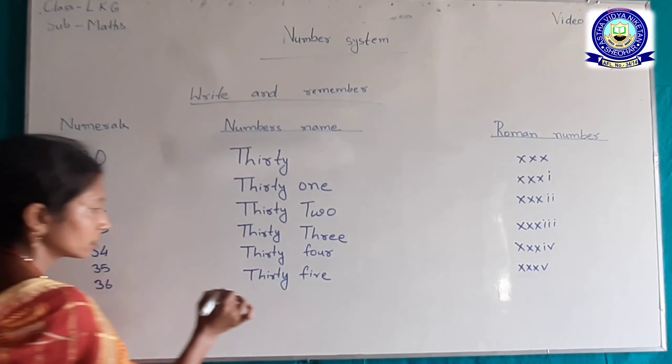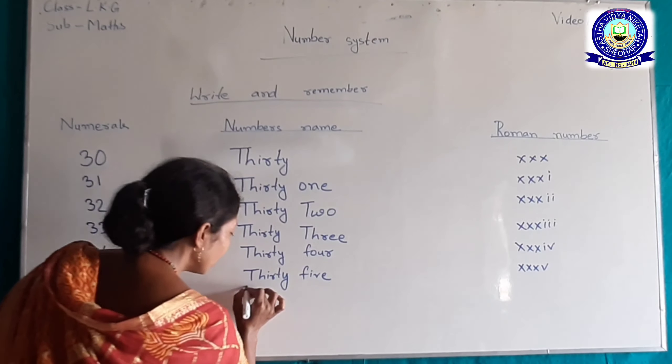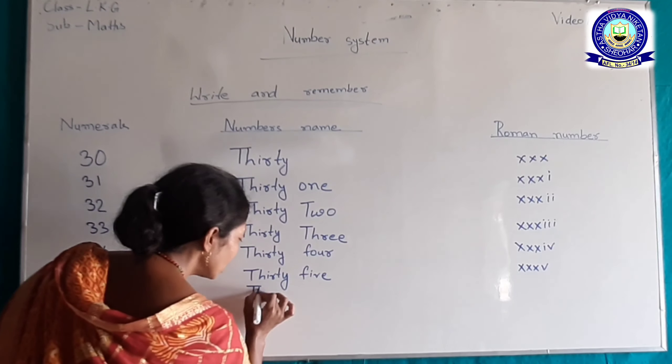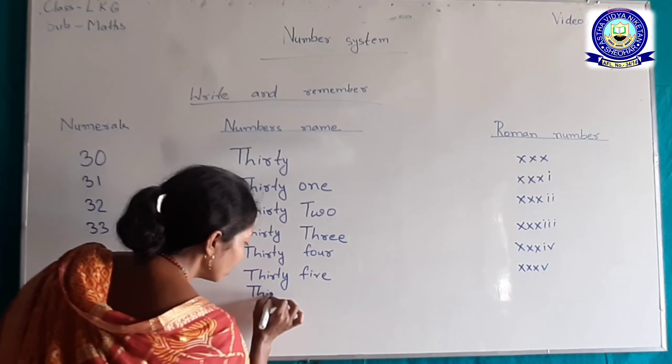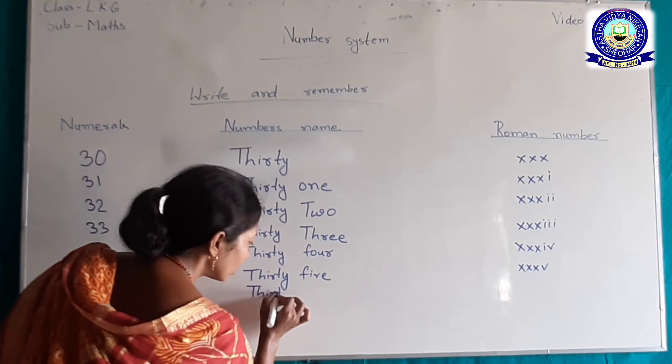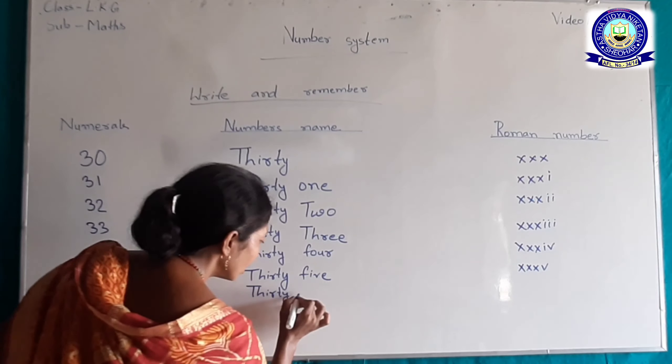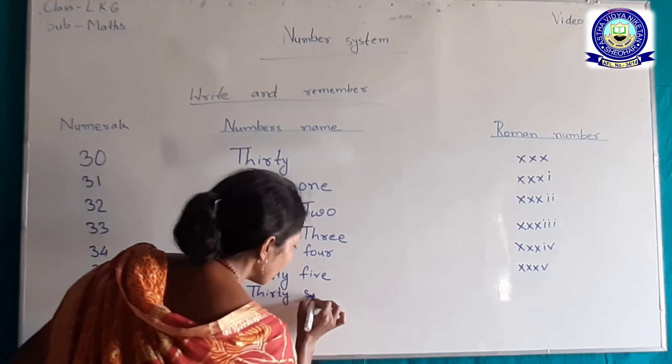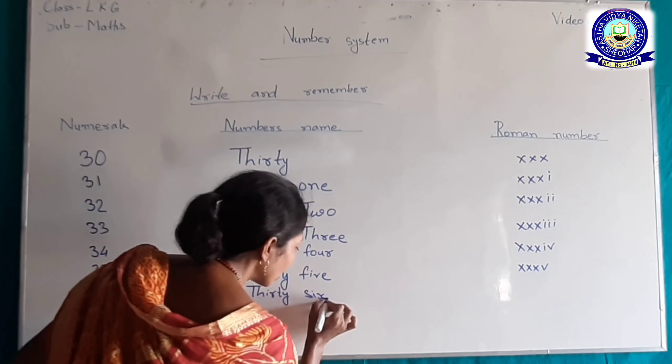36, 36। 36 का word में लिखेंगे: T-H-I-R-T-Y (30 का), S-I-X। 36 का Roman number XXXVI होगा।